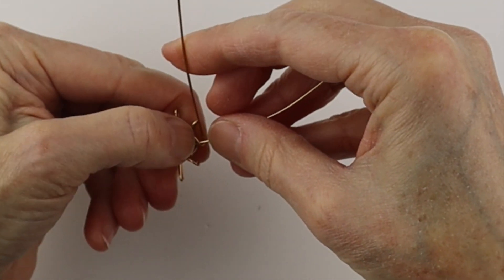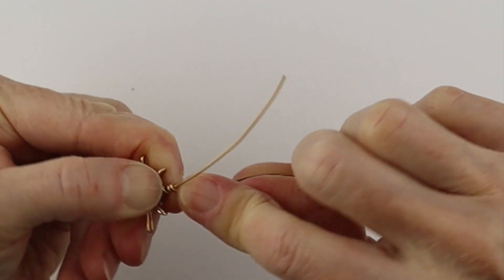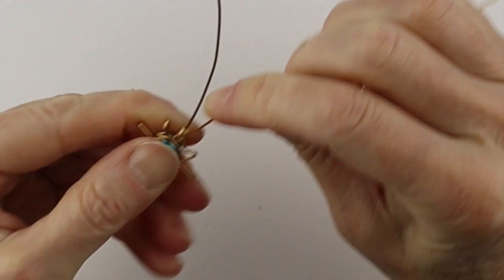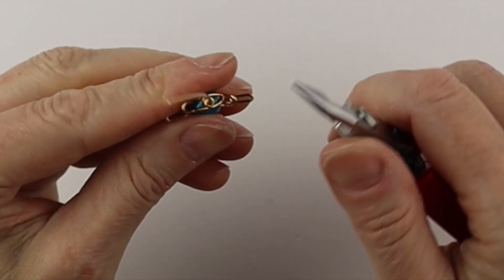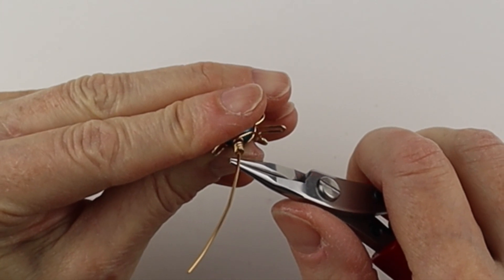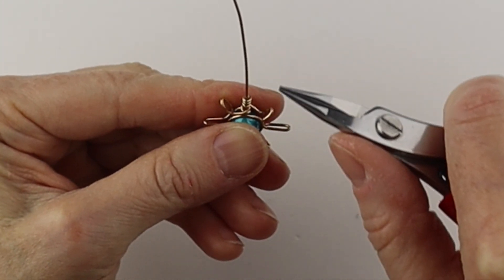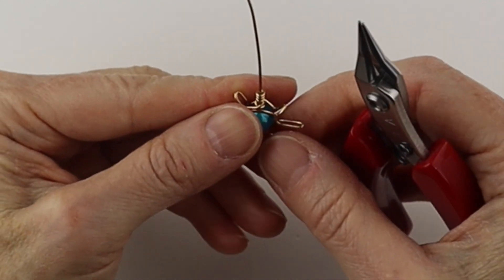So now we can hold this and twist this around a couple of times. So one, two, depending on how tall you want this part of the sun. Clip it. So from here, if we have this wire coming around the front, when you make this loop, you want this wire to go the opposite way so they'll meet flush at the back.